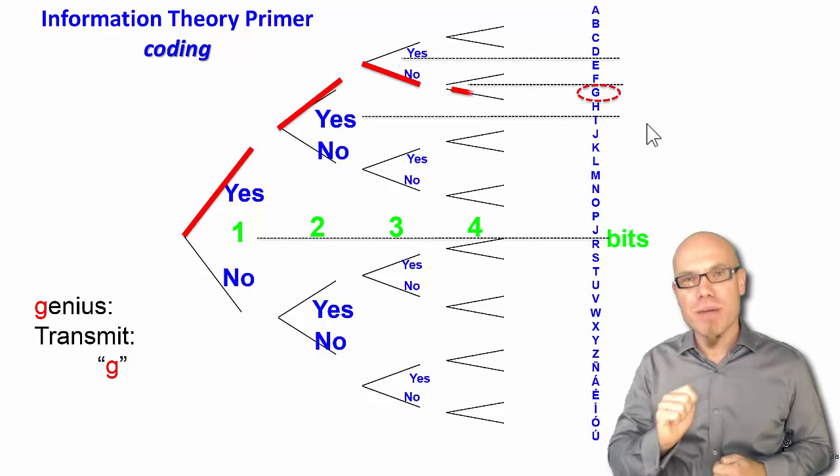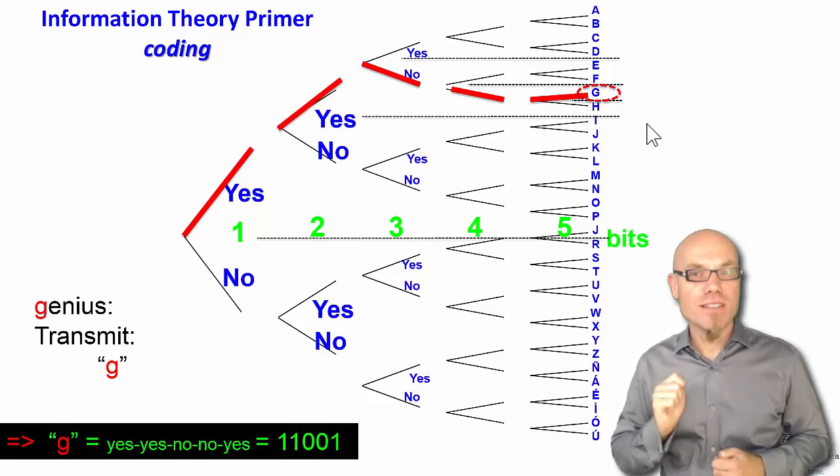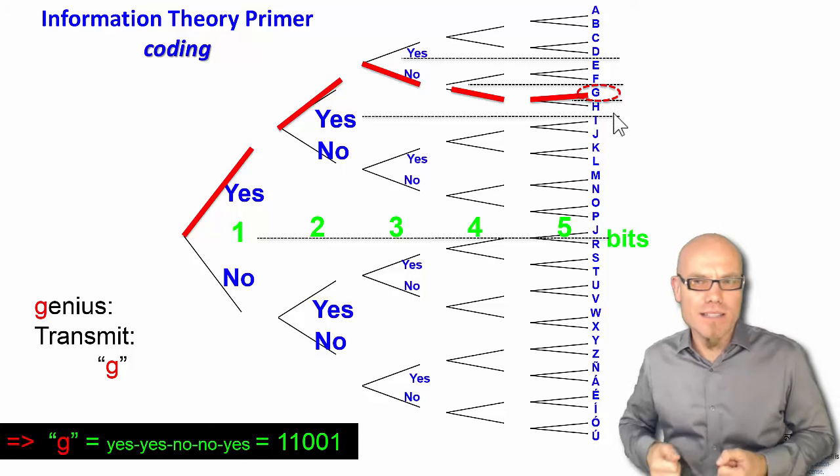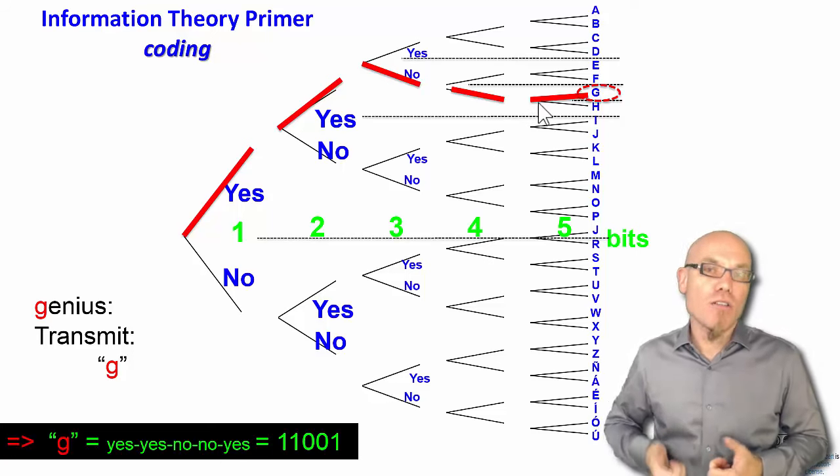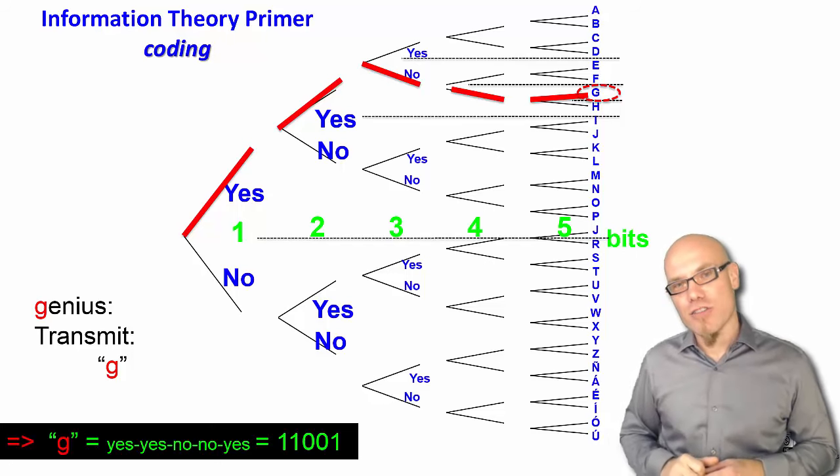So we needed five bits. We reduced uncertainty five times by half. That results in this code 11001, basically what it says: up, up, down, down, up. And we identified with five symbols the letter G.